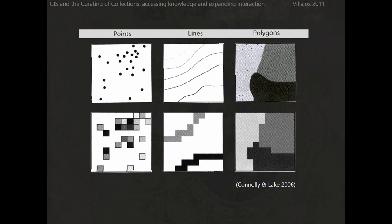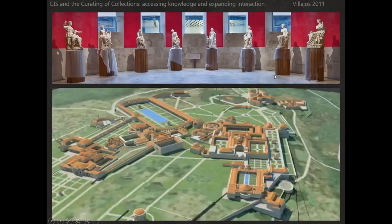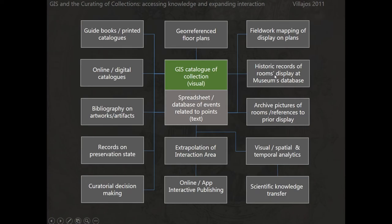Just to introduce GIS technologies for anyone who maybe is not used to this particular technology: the potential they have for representing information and expanding it from the textual to the spatial and the visual is that they can gather both raster images — which is any particular representation of an image — and vectorial representations of the same entities of reality. This method combines both.